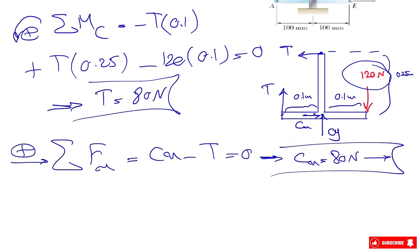Sum of all forces in y direction: Cy plus T minus 120 equals zero. T is 80, so Cy equals 40 newtons. No negative sign again shows the direction was correct.